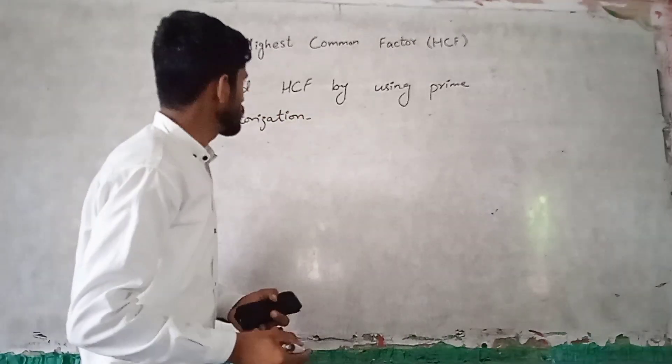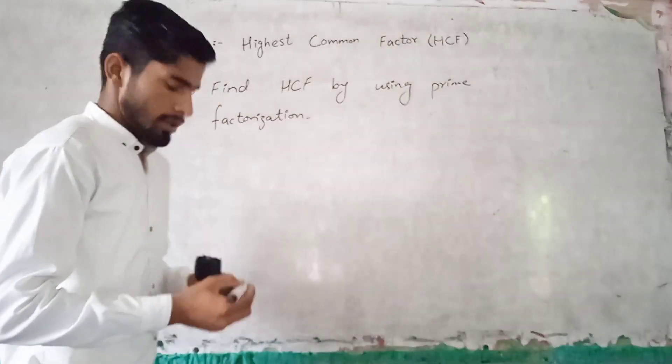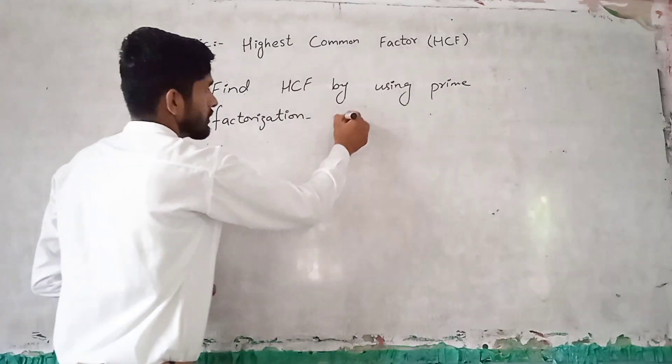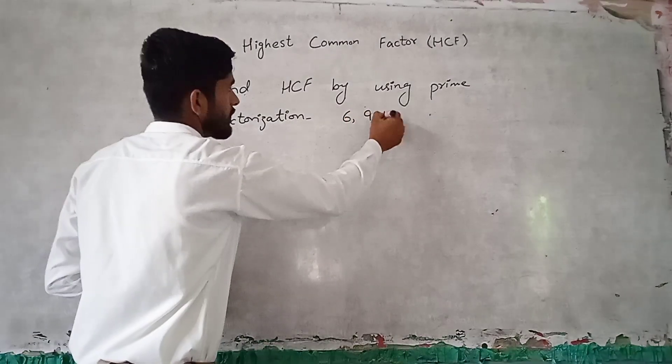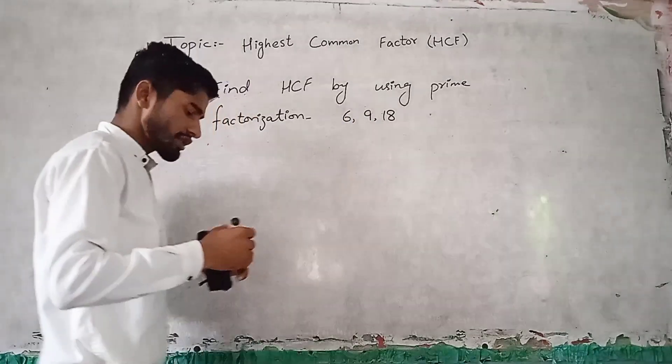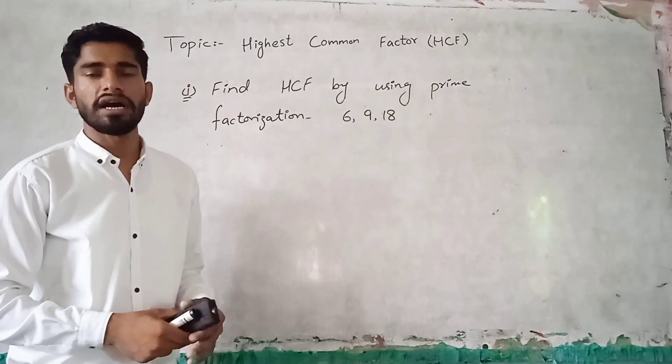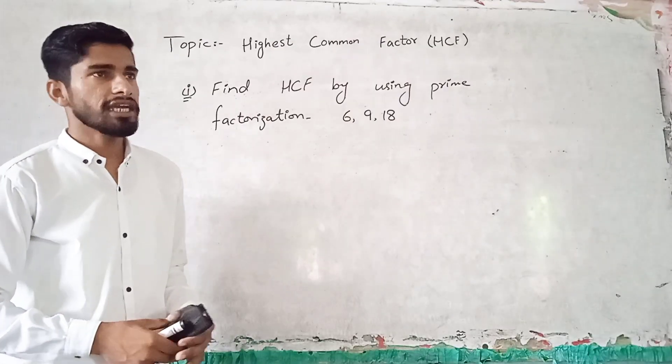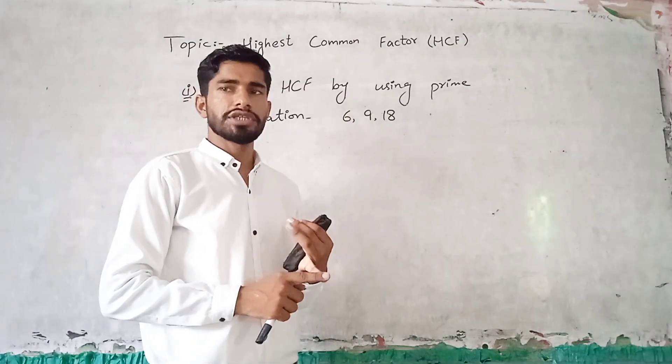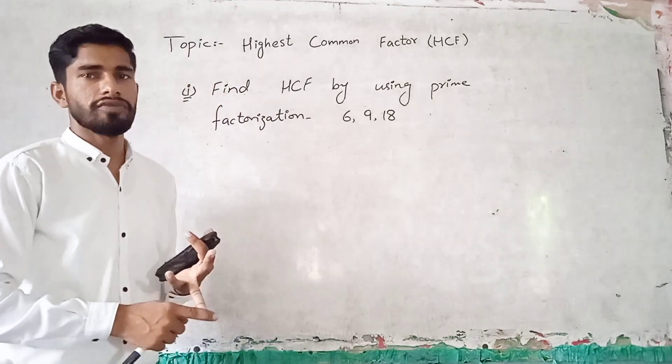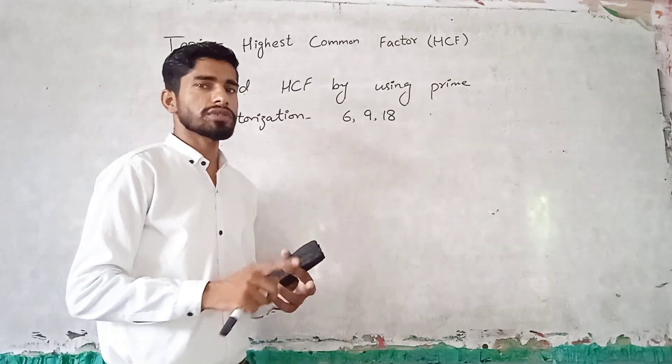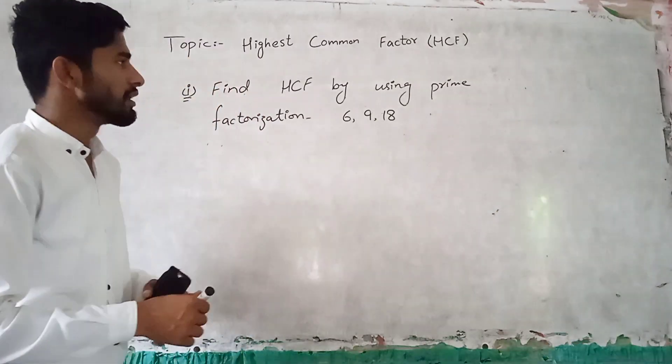Find HCF by using prime factorization: 6, 9, 18. For prime factorization method, HCF has two methods - one method is prime factorization and the other method is long division method. So now let's use the prime factorization method.